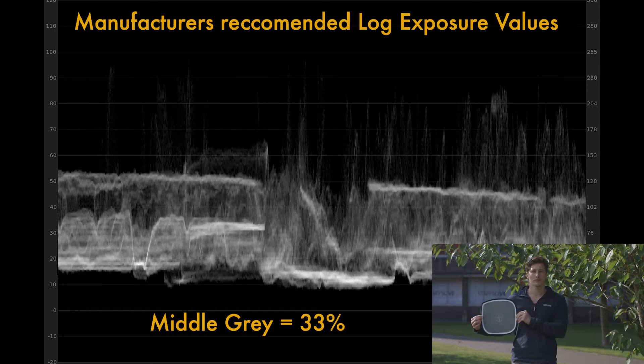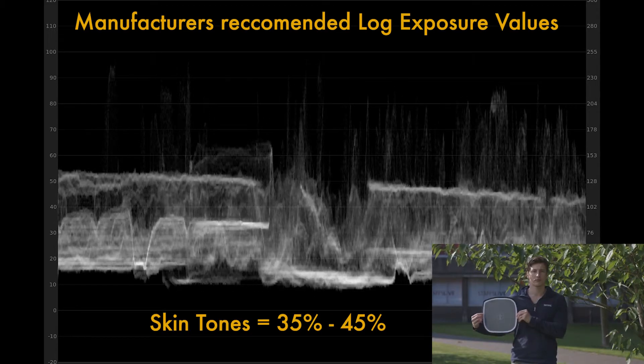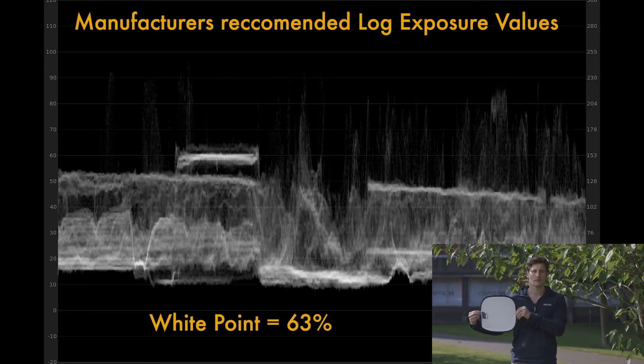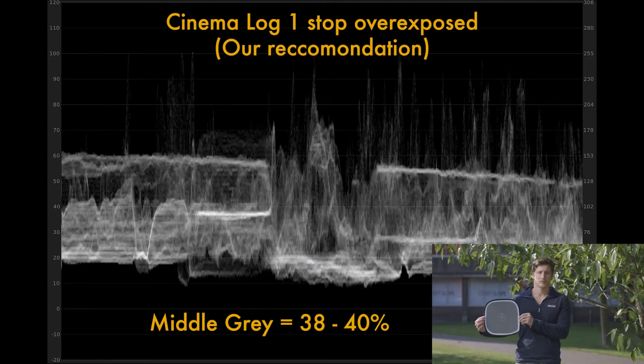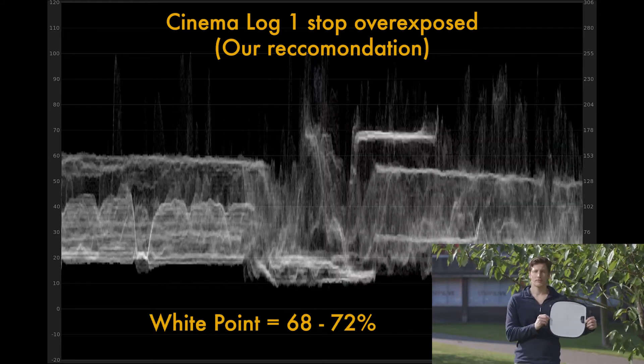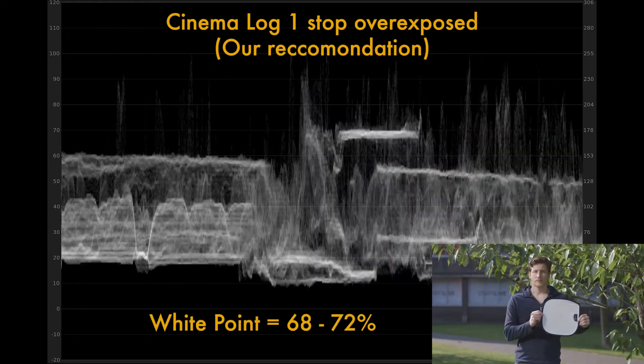So what are the appropriate values to expose for C-Log? Canon recommends the following: middle gray is suggested to sit at approximately 33%, skin tones at around 35 to 45%, and the white point at approximately 63%. But to get that optimal image quality with less noise in the shadows, we want to overexpose — and one stop brighter is normally what we recommend. For this, set middle gray at around 38 to 40%, skin tones between 45 to 55%, and the white point at about 68 to 72%. To check and reference these values, this is where your gray card, white card, zebras, and the waveform really come into play.